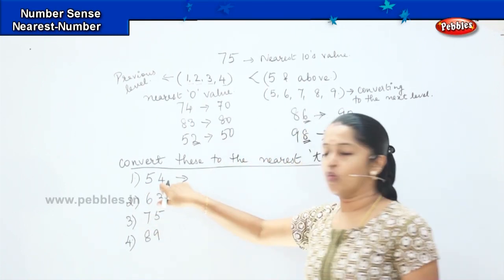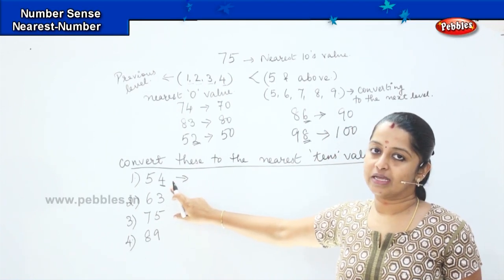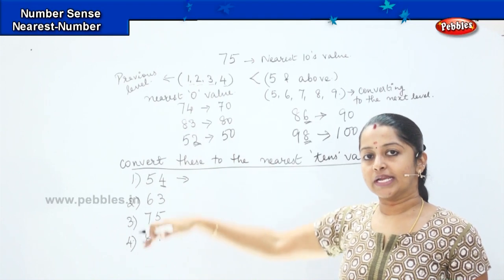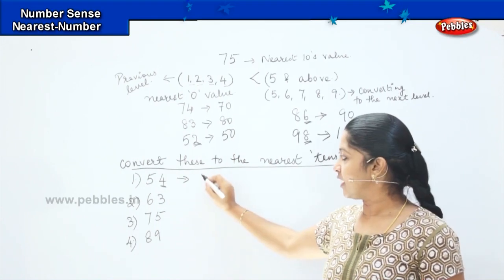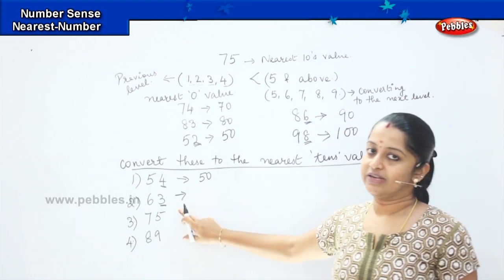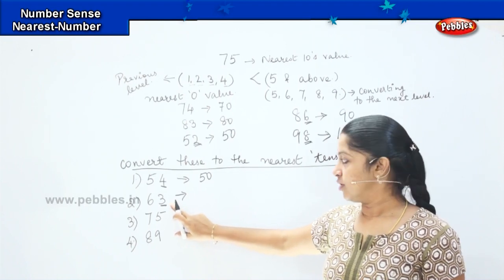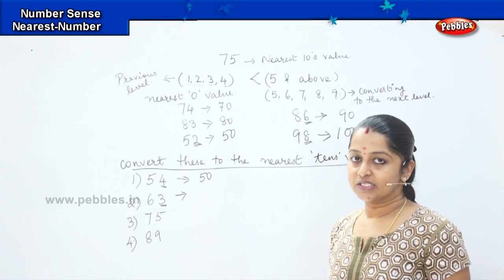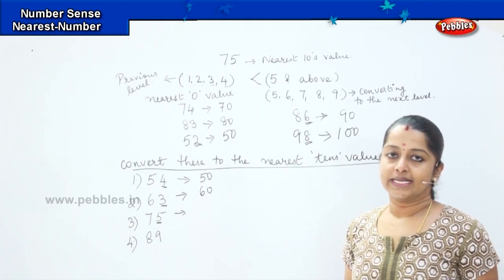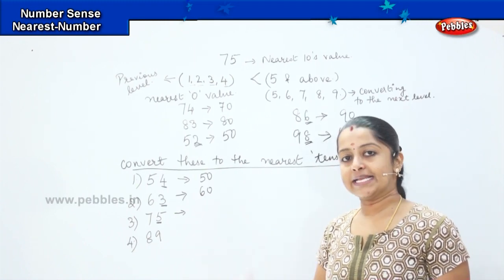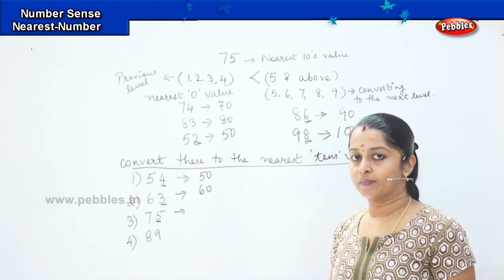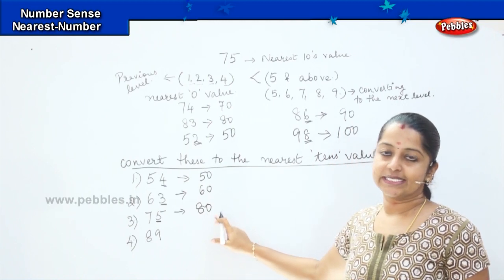Starting with 54: the digit in the ones place is 4. Is it greater than or less than 5? It is less than 5, so we convert to the previous tens value — 50. Next, 63: the ones digit is 3, which is less than 5, so the nearest tens is 60. For 75: the ones digit is 5, which is 5 or above, so we convert to the next tens level — 80.